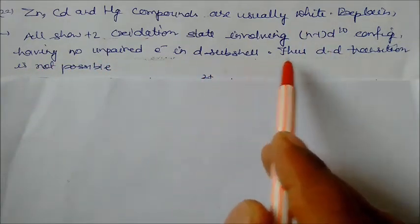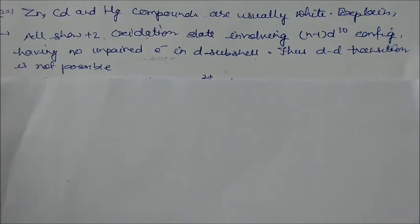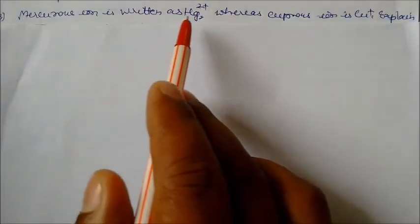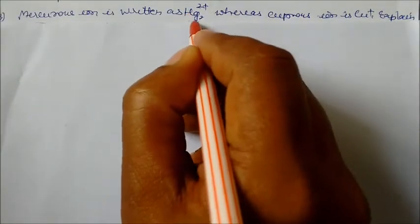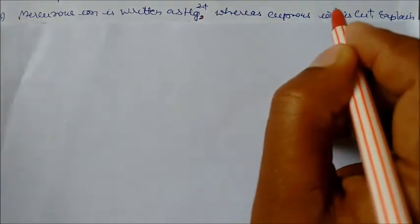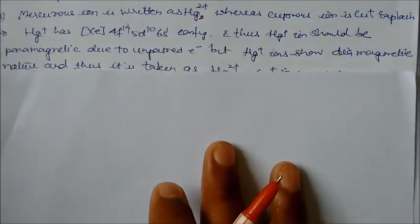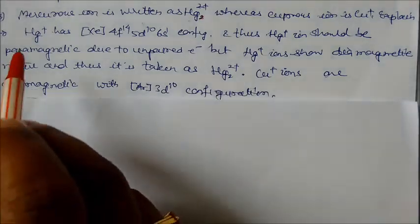Mercurous ion is written as Hg2²⁺ whereas Cu+ is present as Cu+. Reason is that Hg+ has the configuration xenon 4f14 5d10 6s1.